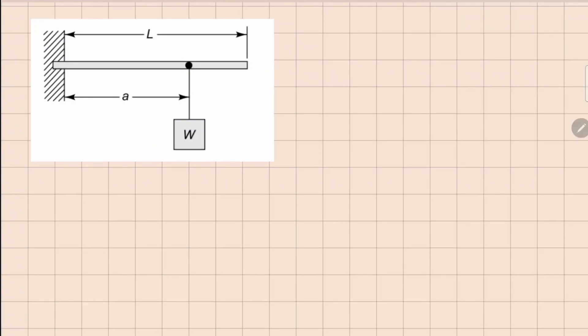This one is 3.2. Here we have a cantilevered beam on which there is a weight hanging right here, and there is this overhang. So this weight is hanging at a distance of A and the total length of this beam is L. We need to complete the shear force and bending moment diagram for this.